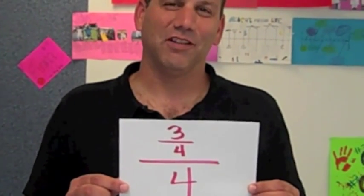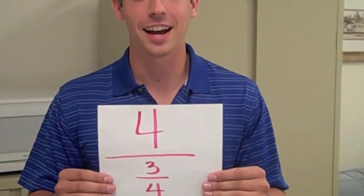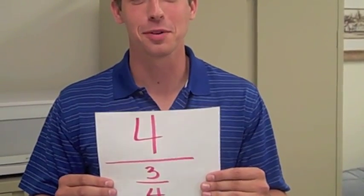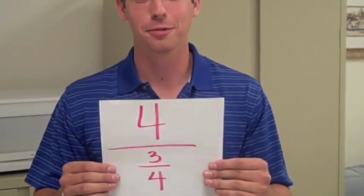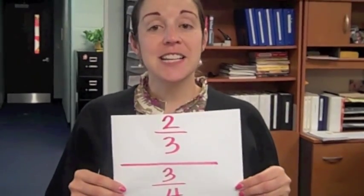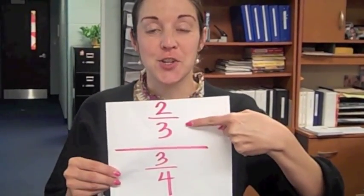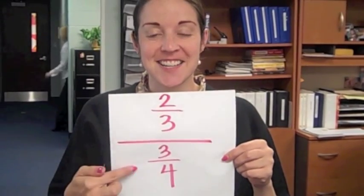This is an example of a complex fraction. There's a fraction in the numerator. Hi, this is another example of a complex fraction when the fraction is in the denominator. Hello, ladies and gentlemen. This is an example of a complex fraction. There is a fraction in the numerator and in the denominator.